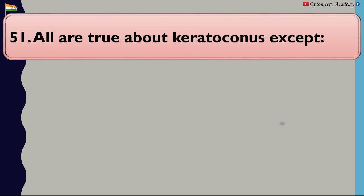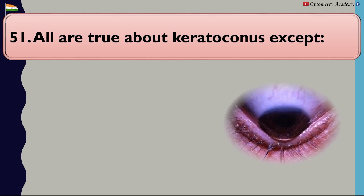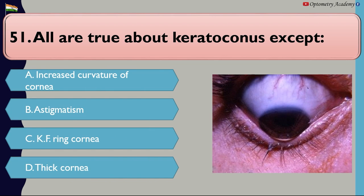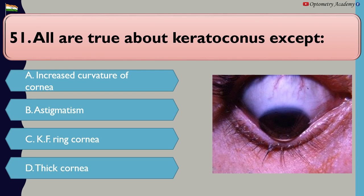All are true about keratoconus except: A. Increased curvature of cornea, B. Astigmatism, C. KF ring cornea, D. Thick cornea.